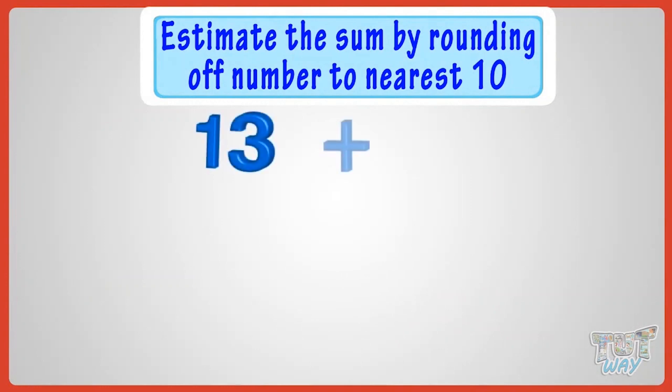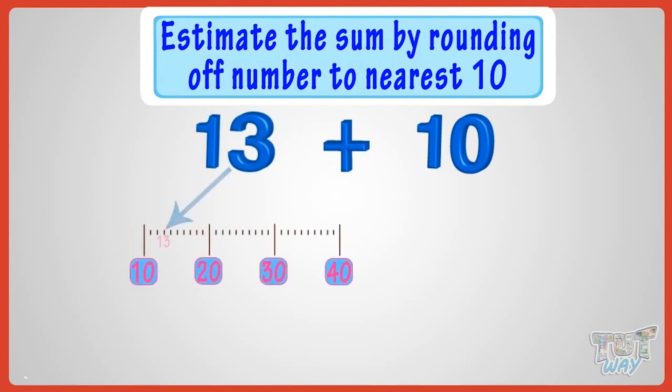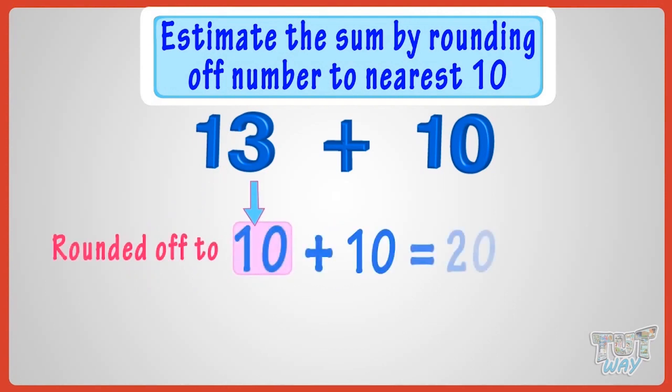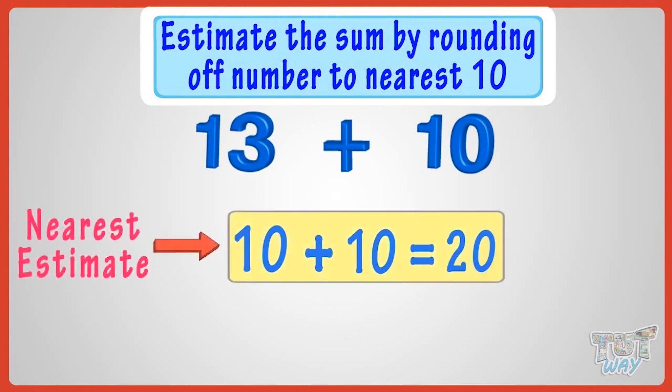You have to add 13 and 10. 13 is midway between two tens, so we will round off 13 to nearest 10. 13 will be rounded down to 10 as it's below the 5 mark. Now, add the rounded off figures to calculate the estimate. 10 plus 10 equals 20. So the nearest estimate of 13 plus 10 is 20.